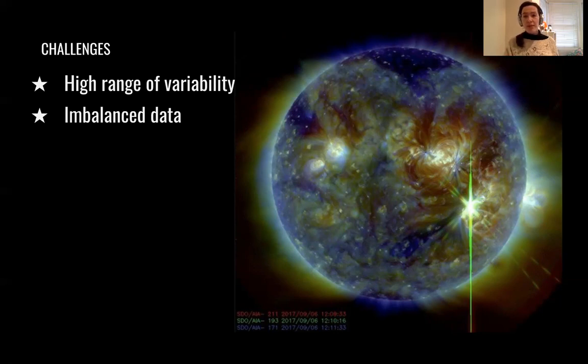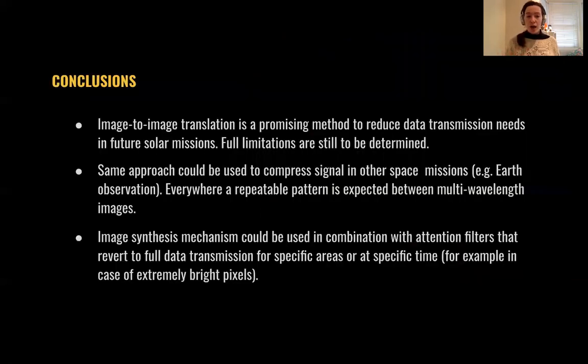I think that my time is running out. I want to just conclude summarizing what we have seen and some key ideas. So first of all, we have seen that an image to image translation approach could be a promising method to reduce data transmission needs in future solar missions. Which are the full limitations of this approach are still to be determined, and this is a work in progress.